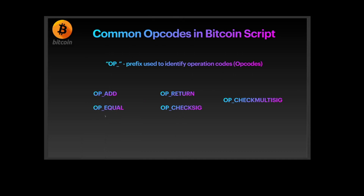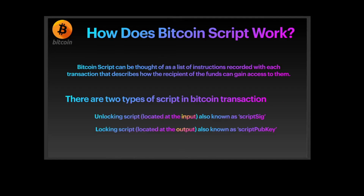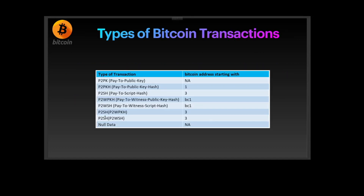The common op codes for Bitcoin Script are referenced using the OP_ prefix. The common op codes include ADD, RETURN, EQUAL, CHECKSIG, and CHECKMULTISIG. Bitcoin Script works through two kinds of script in a transaction: the unlocking script, known as ScriptSig, and the locking script, known as ScriptPubKey. Bitcoin script can be thought of as a list of instructions recorded with each transaction that describes how the recipient of the funds can gain access to them.